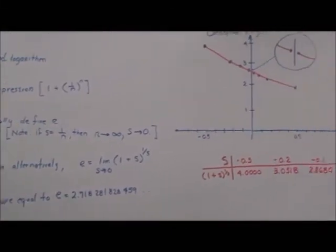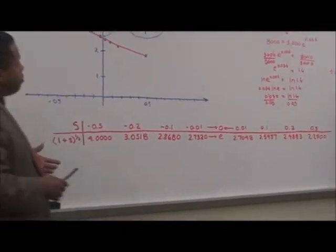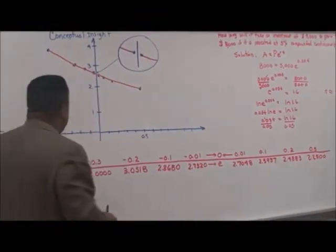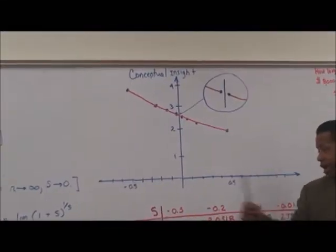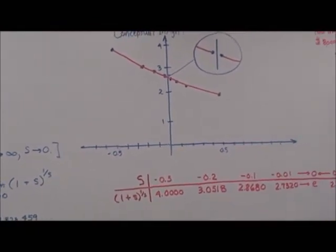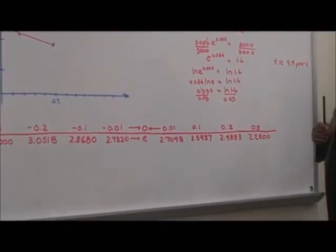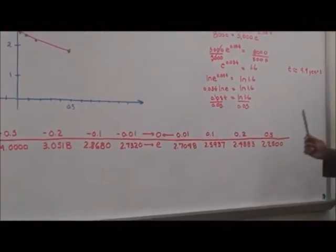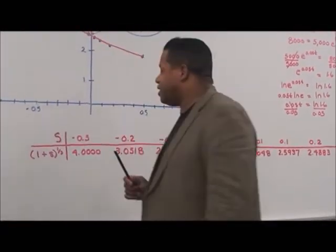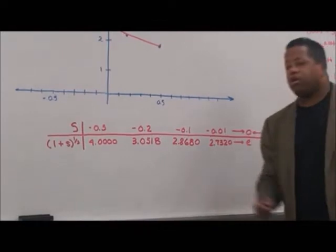We can look at a graph and prove this is happening. If we look at the values of s — negative 0.5, negative 0.2, negative 0.1, negative 0.01, then 0, 0.01, 0.1, 0.2, and 0.5 — and plug these into (1 + s)^(1/s), we get corresponding output values.